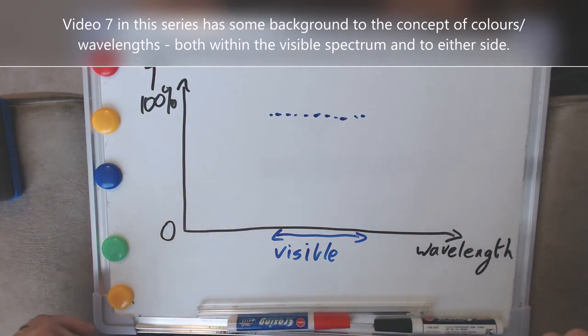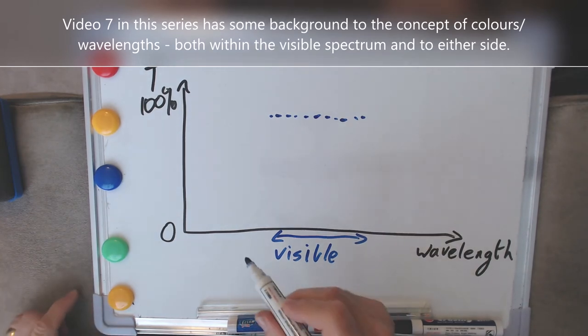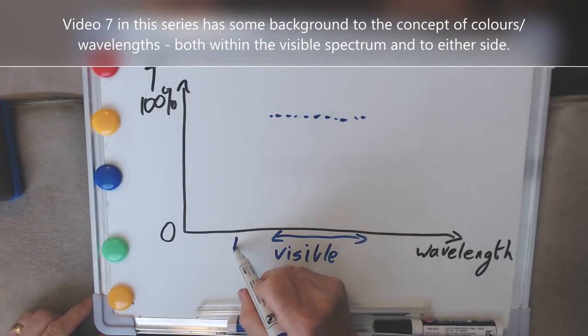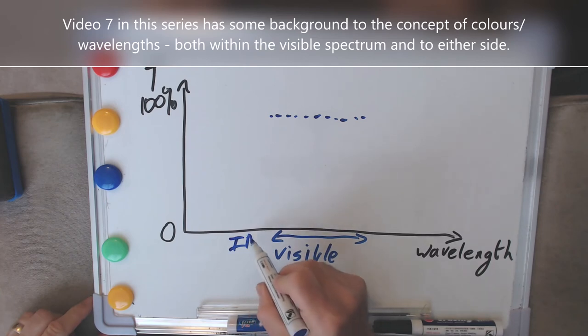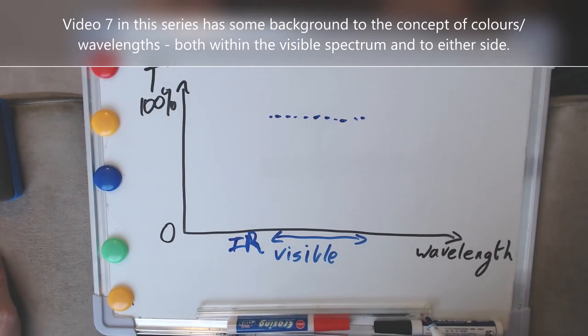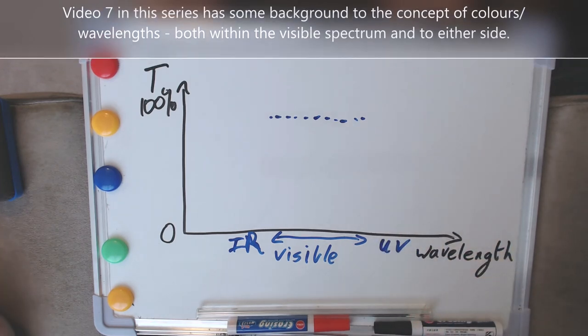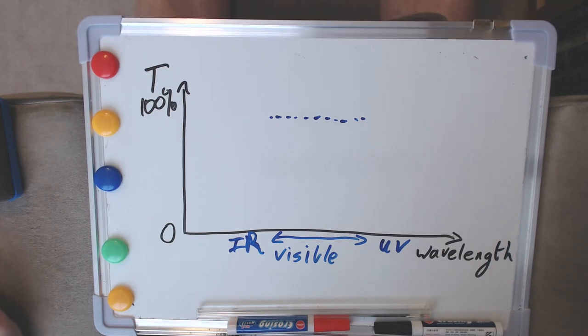But if we go outside the visible range, we get for instance invisible light. So we'd have infrared out here for instance, which is essentially heat energy. Out the other side we'd have ultraviolet, which is what of course burns our skin if we're in the sun too long. And actually way out this way, beyond infrared, in a region out here is where we'd find our microwaves for instance.